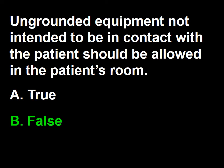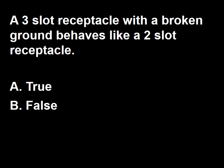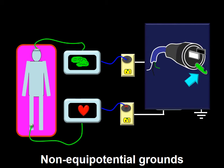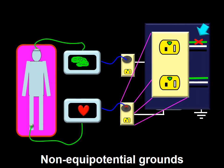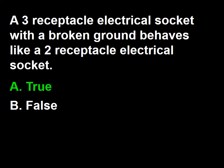The next question: a three-slot receptacle with a broken ground behaves like a two-slot receptacle — true or false? The broken ground pin provides more resistance than an unbroken one. So does a broken line between the electrical receptacle and the electrical box. In both of these cases, the broken ground will render the three-slot receptacle as an ungrounded two-slot receptacle. The answer to this question is A — true.